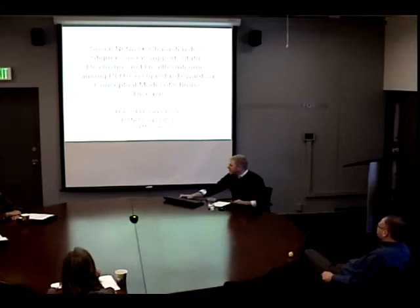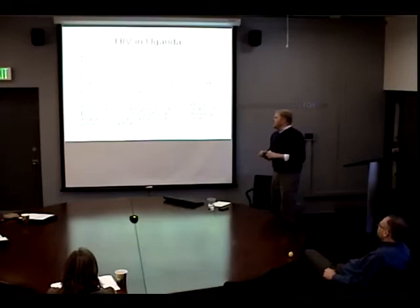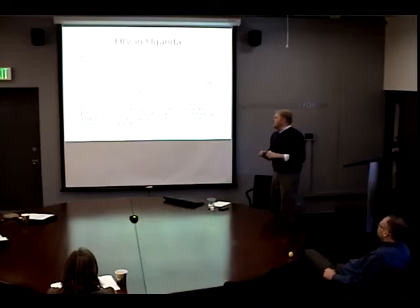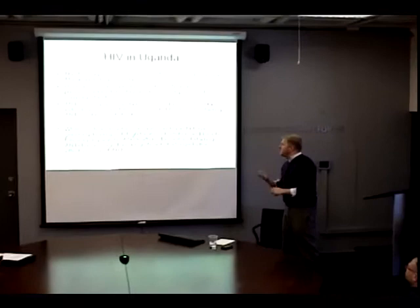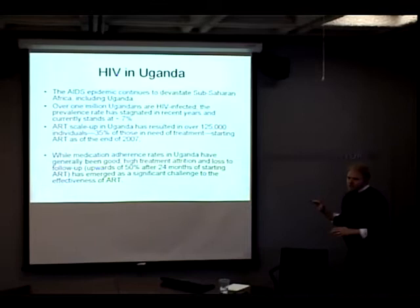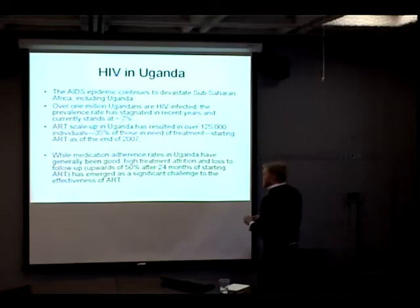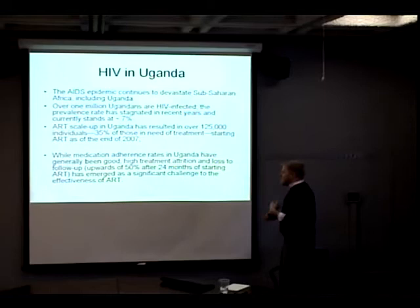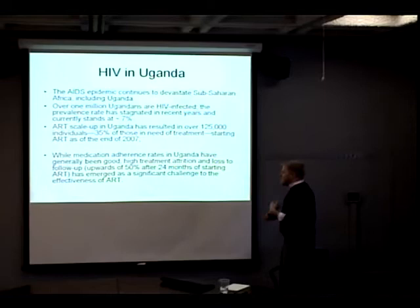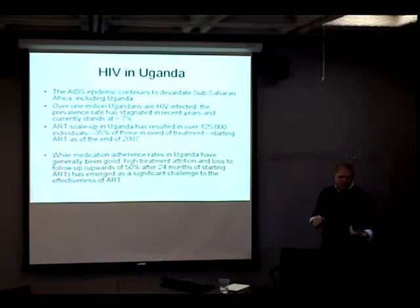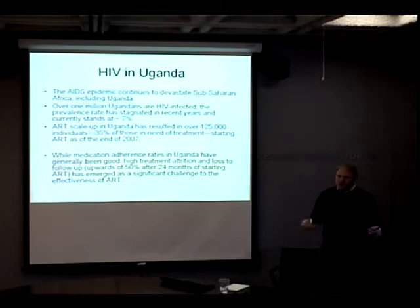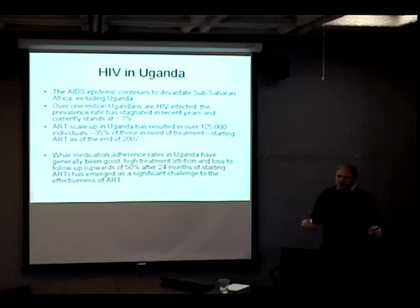Obviously we know that the AIDS epidemic continues to be a problem in Sub-Saharan Africa, particularly including Uganda. At the last measure, which was around 2008, over a million Ugandans were HIV-infected with a prevalence rate holding steady at about 7%. We're not seeing any decreases in HIV prevalence. ART scale-up has done well — 30% of those needing ARV are getting treatment. While medication adherence has been good, we're finding care attrition: over the course of time, people are dropping out of care. They're coming to doctor's visits for a while and then ultimately not staying, which has a significant effect on the effectiveness of ART — anti-retroviral treatment.